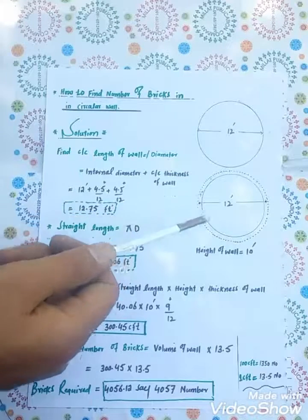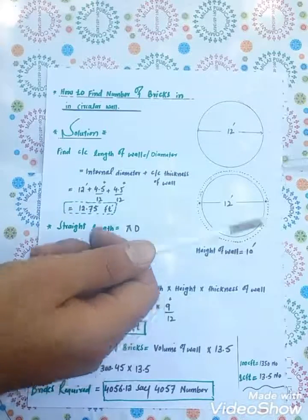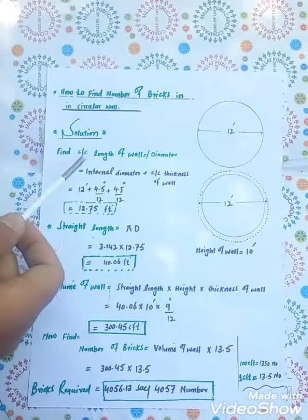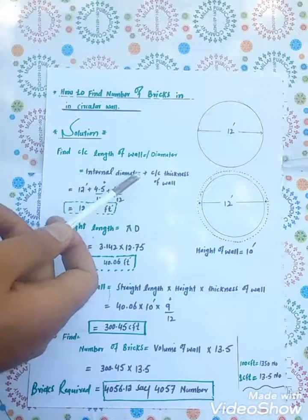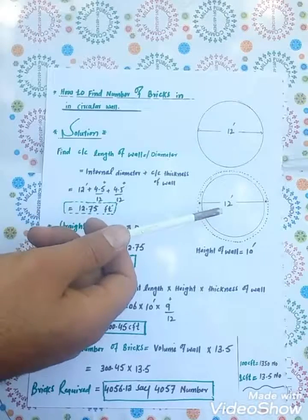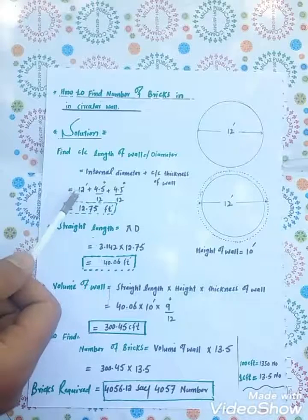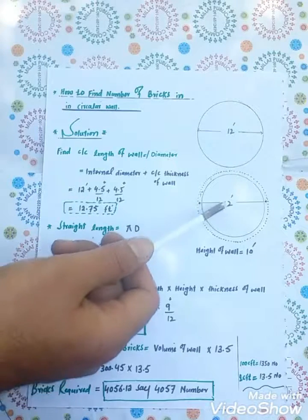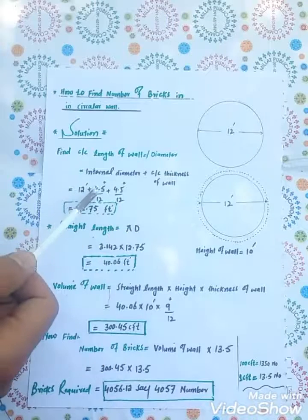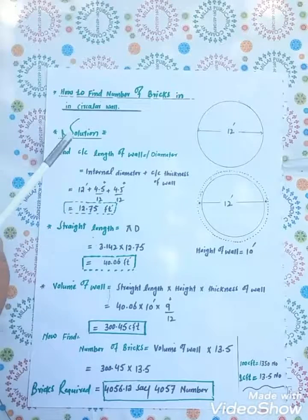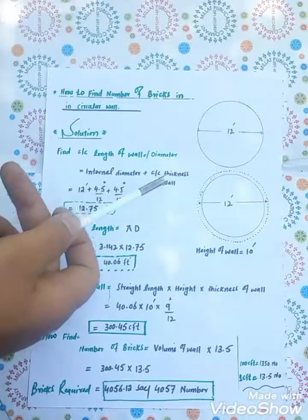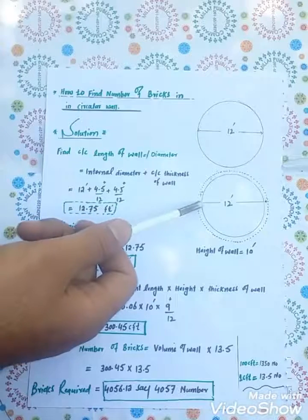First of all, we need to find center to center distance of the circular wall. 12 feet - this is internal diameter - plus 4.5 inches divided by 12. This is the center of this wall from one side plus 4.5, this is from other side, thickness of wall.